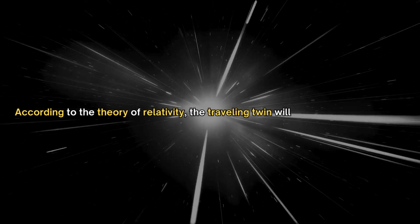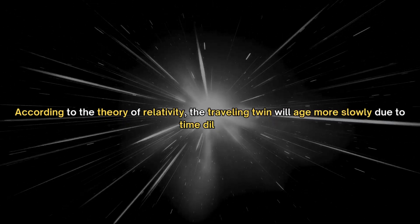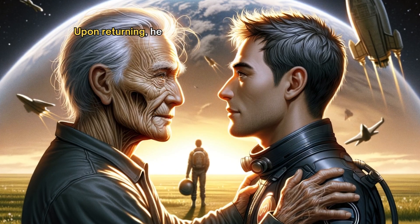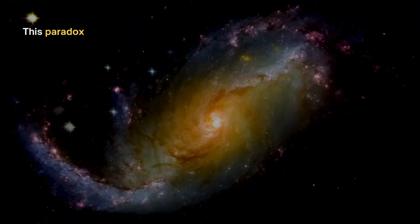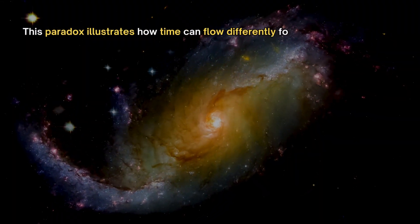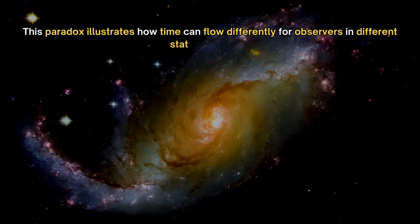According to the theory of relativity, the traveling twin will age more slowly due to time dilation. Upon returning, he will find his brother significantly older. This paradox illustrates how time can flow differently for observers in different states of motion.